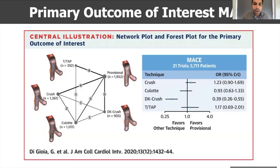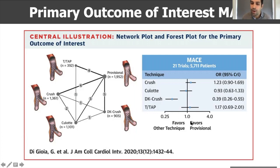This work was published a couple of months ago in JACC Cardiovascular Interventions. The primary result is the forest plot of MACE across 21 trials and 5,711 patients. Everything on the right side favors provisional stenting, as all techniques are compared against provisional. Looking at CRUSH, the 95% credible interval touches the line of 1, so there is no significant difference between provisional and CRUSH for MACE, with an odds ratio of 1.23.